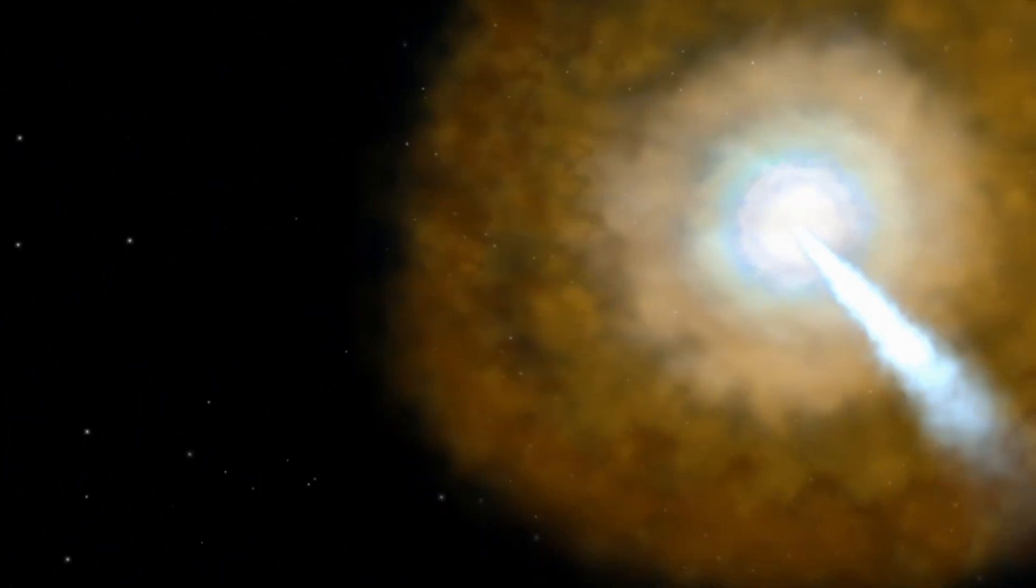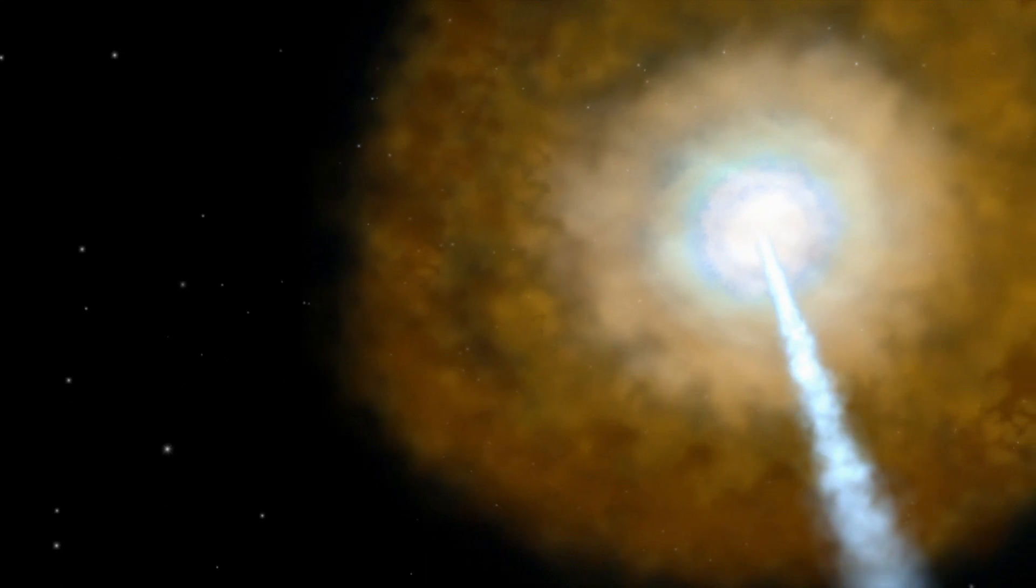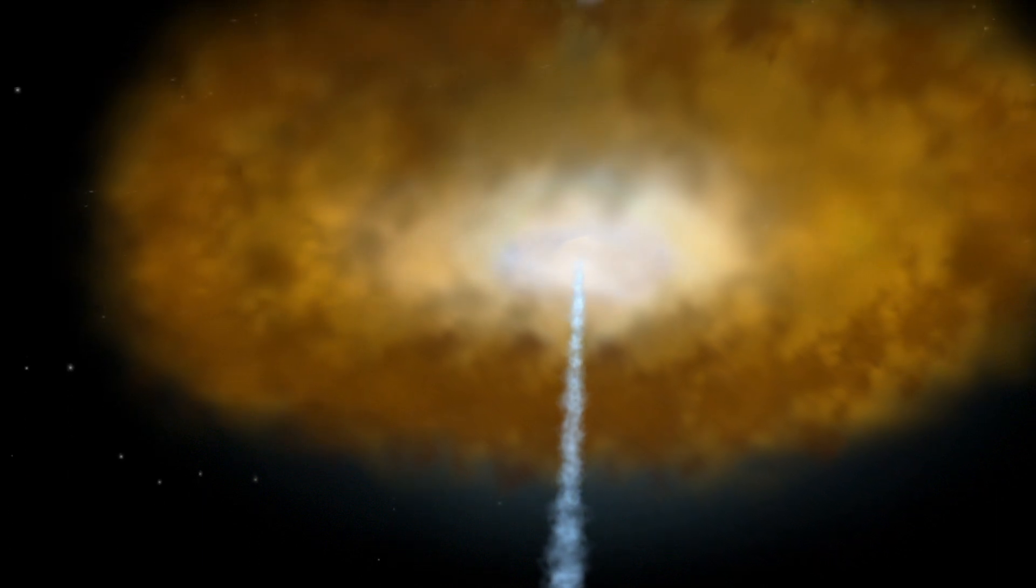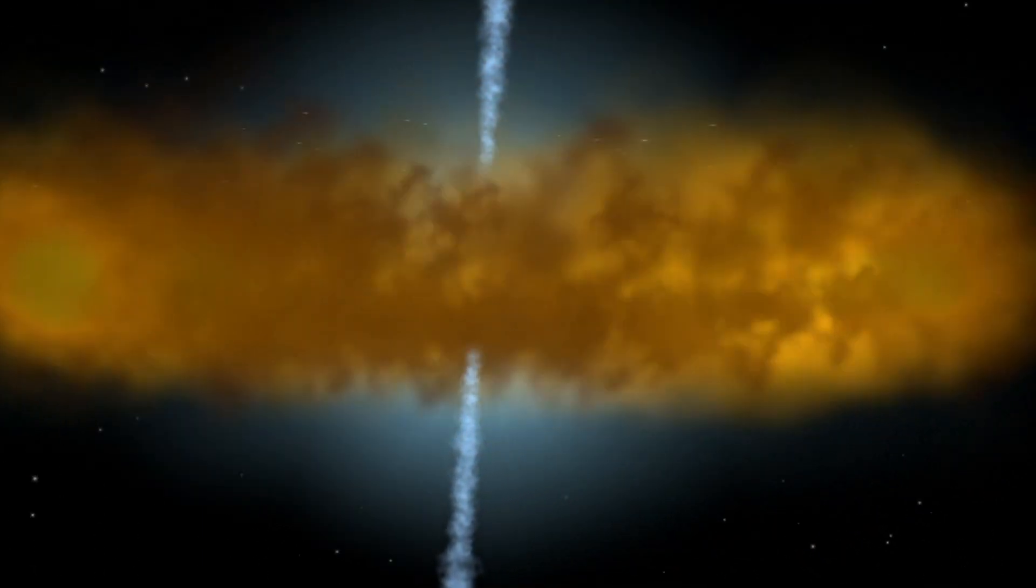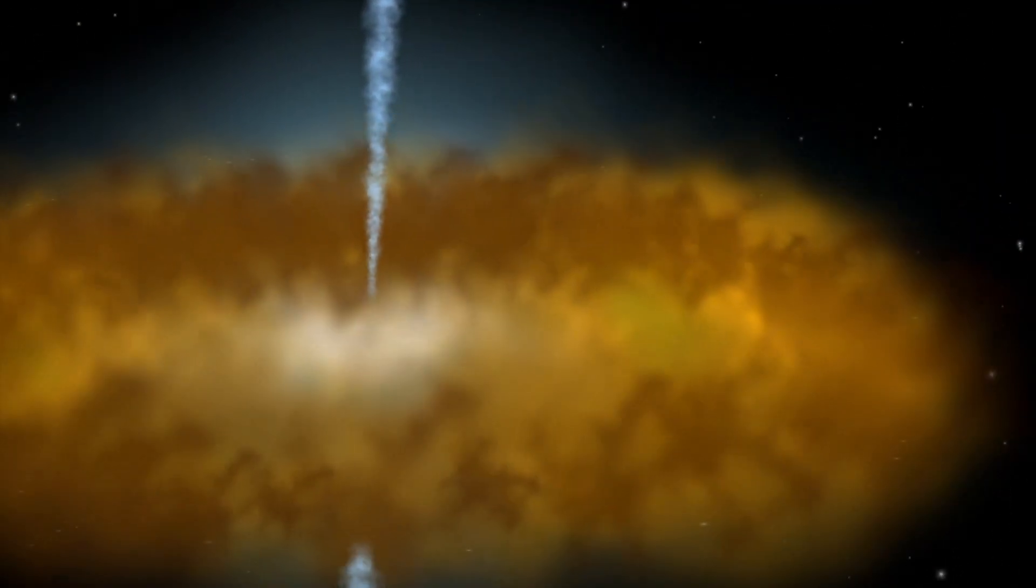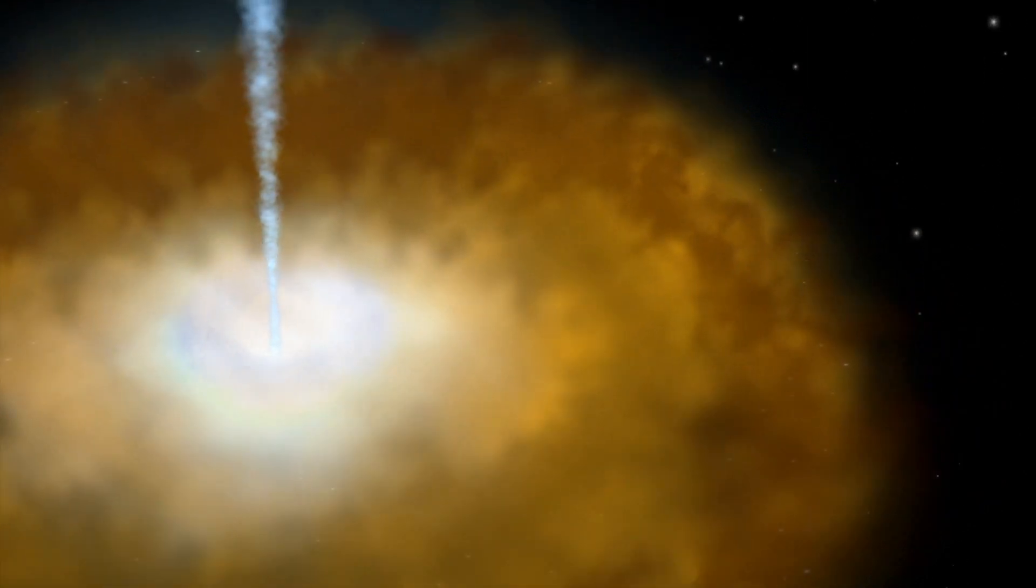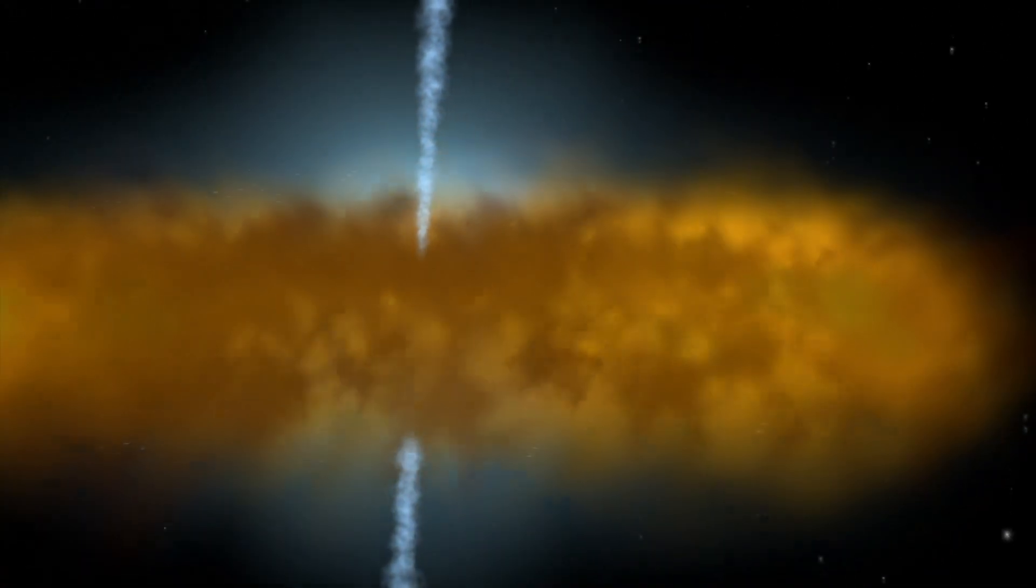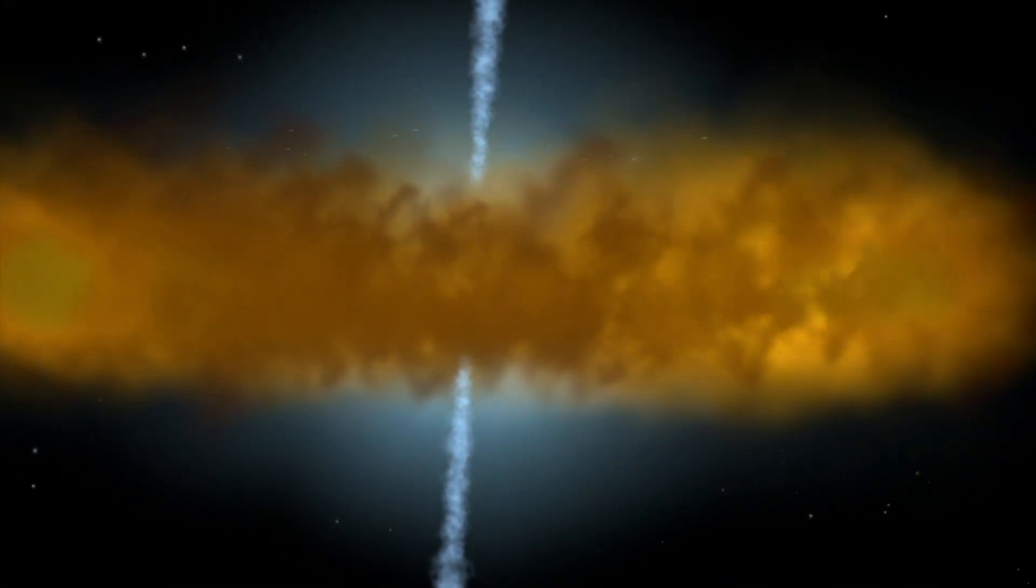What emission we detect from an active black hole is a function of how we see it, whether we're looking face-on and into one of its jets, or viewing it from the side through the disk of gas and dust that surrounds it. The brightest active black holes, which include quasars and blazars, are those we see face-on. But as the viewing angle increases, the surrounding disk absorbs increasing amounts of radiation.